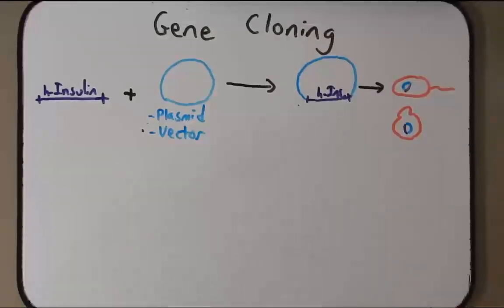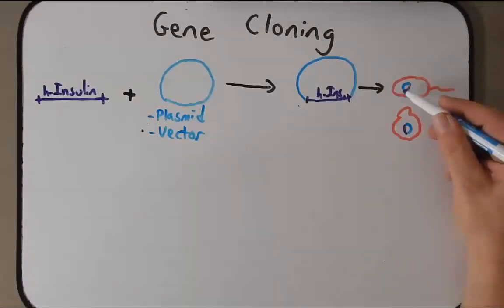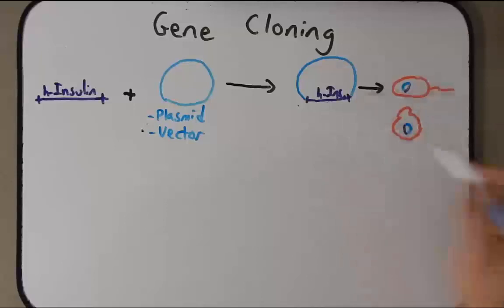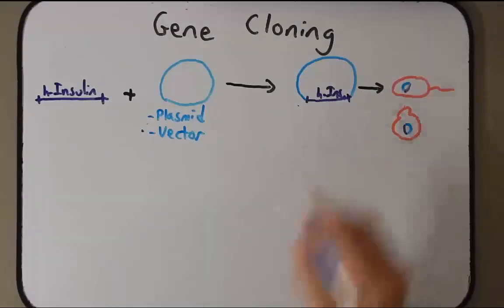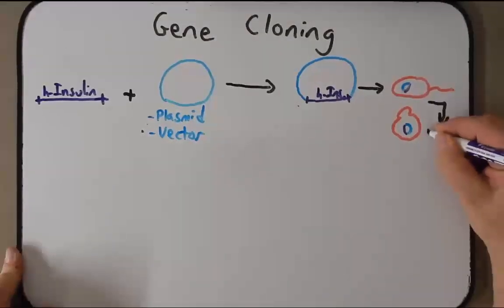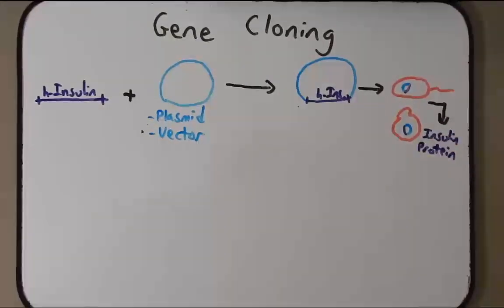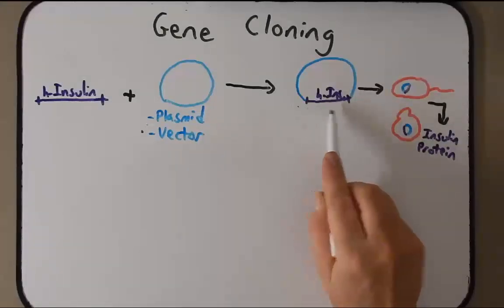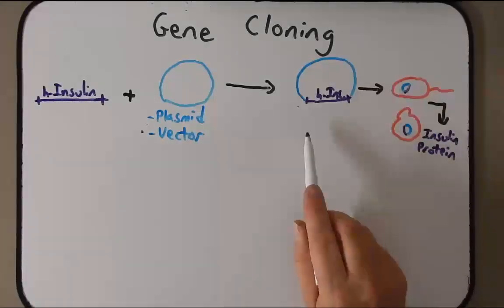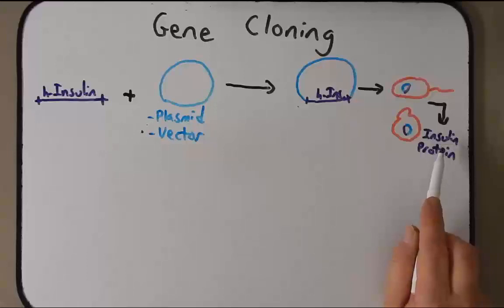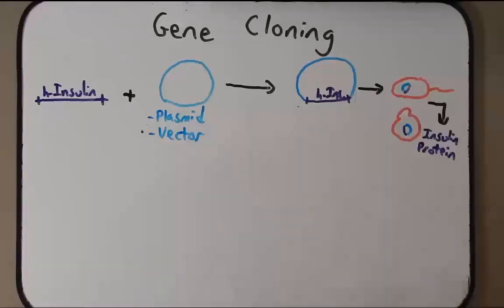Within these cells they will mass produce these plasmids containing the human insulin so that we have many copies of this. At that point we can isolate the protein insulin. In lab you will do a very similar process, but instead of isolating a protein you'll sequence the gene.